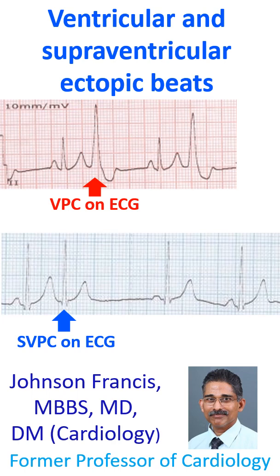Isolated ventricular and supraventricular ectopic beats are quite common. Ventricular ectopic beats are recognized as wide, bizarre QRS complexes which occur prematurely and are not usually preceded by a P wave.